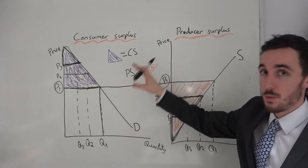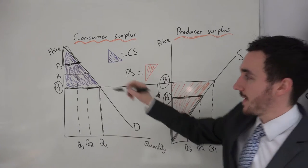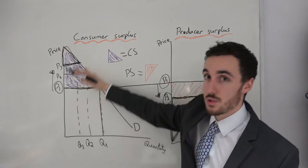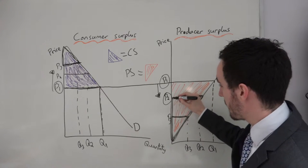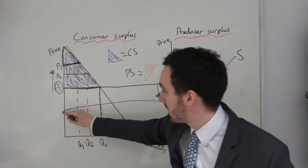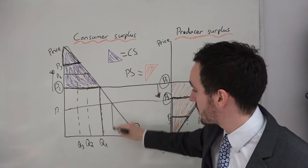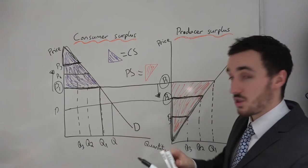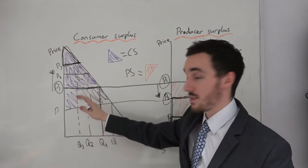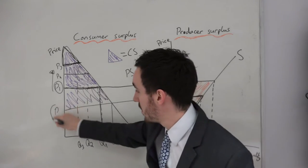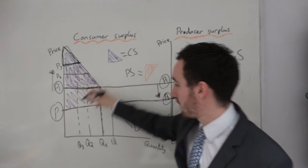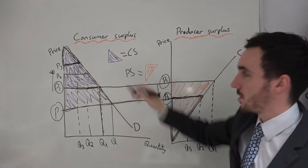The same applies to the consumer surplus diagram — in reverse. If the price gets higher, consumer surplus is actually shrinking. Similarly, if the price in the market drops, we go to the demand curve and down to the new quantity level, and the consumer surplus has got bigger. There are some consumers willing to pay more than the new lower price, so going to the demand curve we now have a much larger consumer surplus triangle.